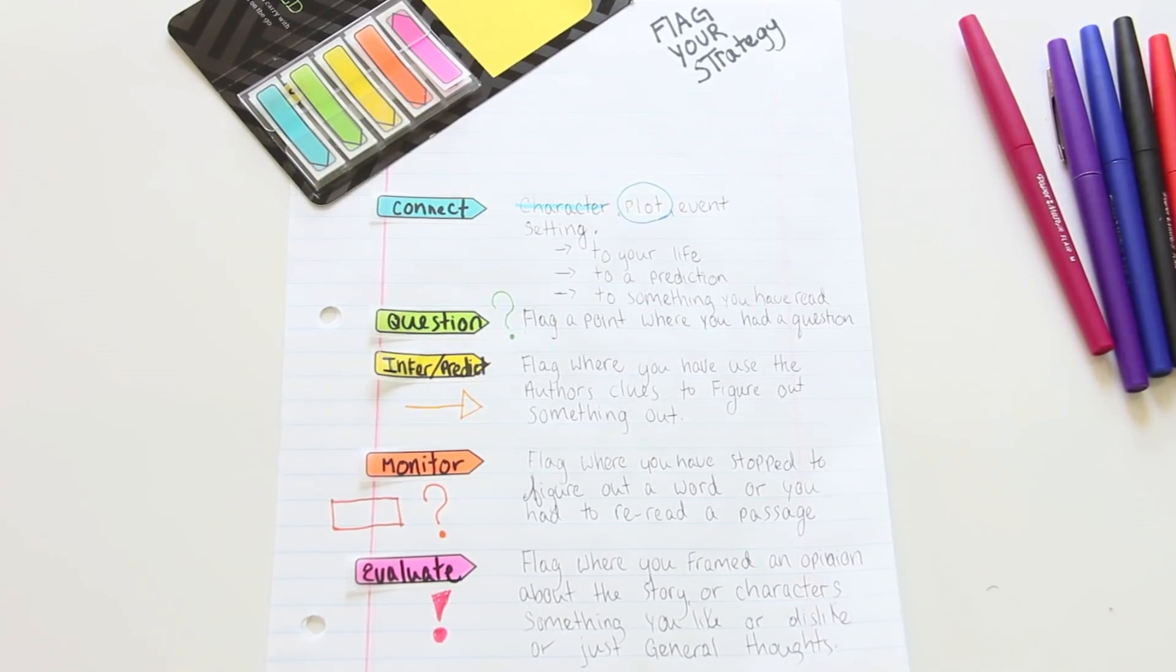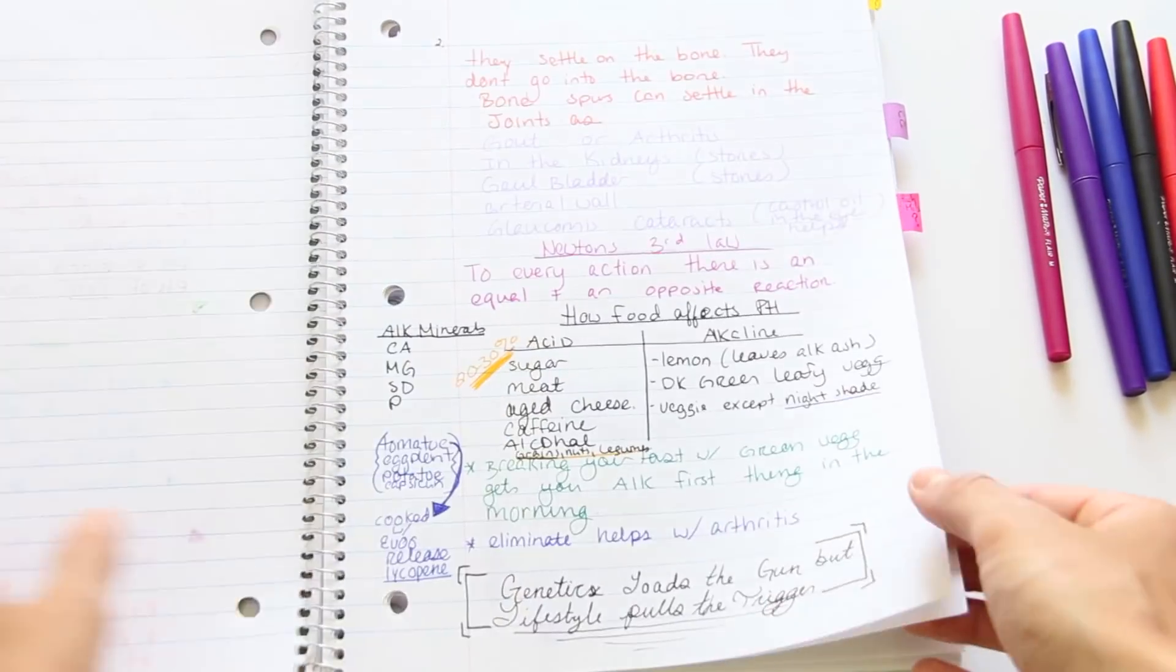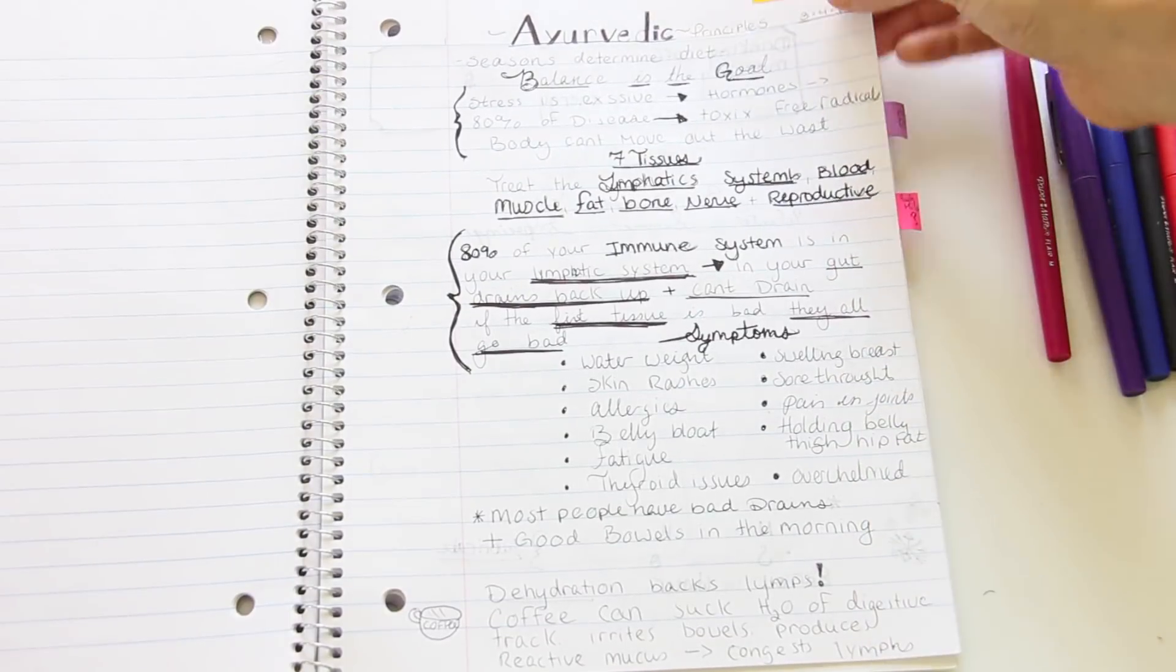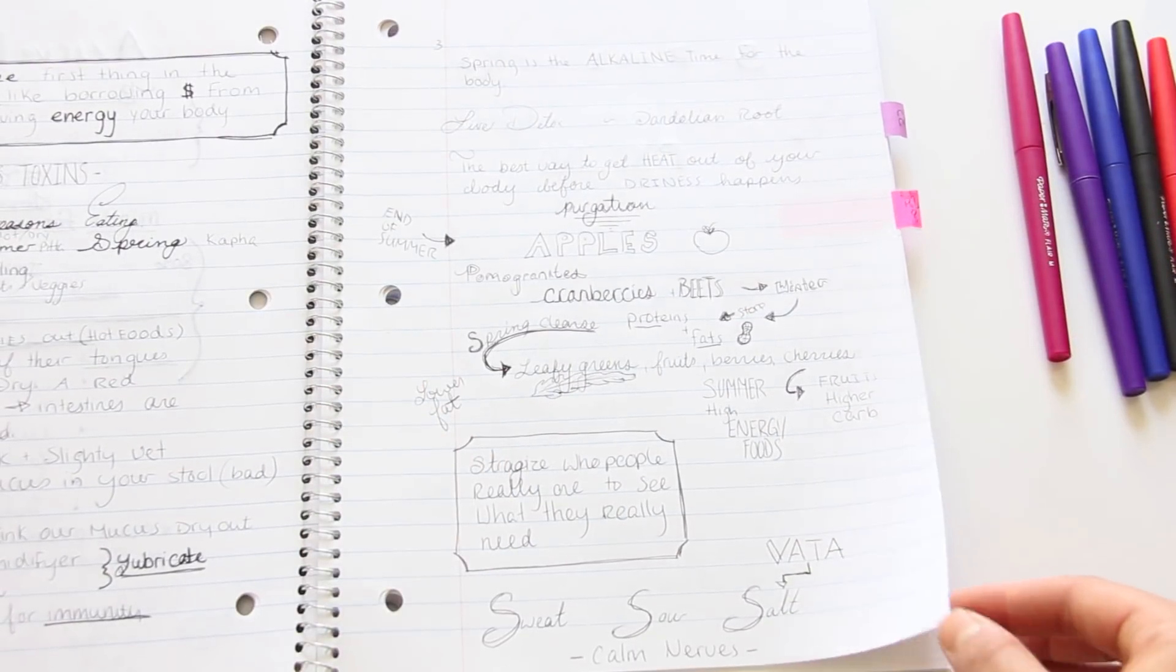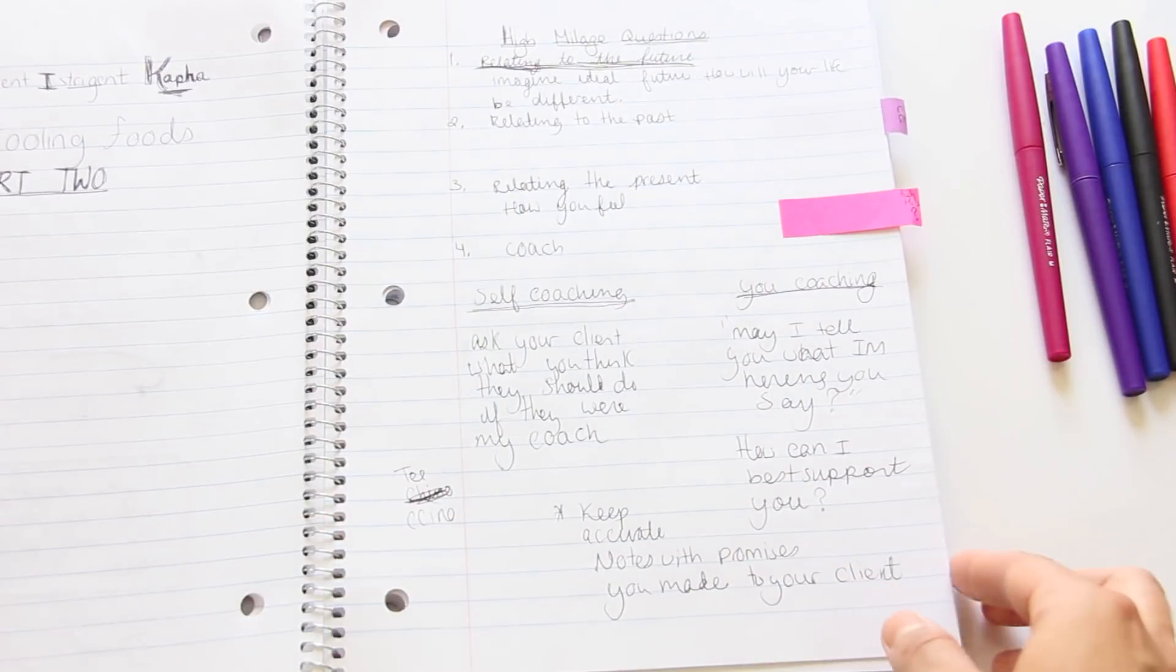Now I'm going to show you what did not work for me. Here I used a ton of color. It was way too busy for my eyes. And here I used too many drawings and it was all black and I couldn't really see. So you have to find what works for you.